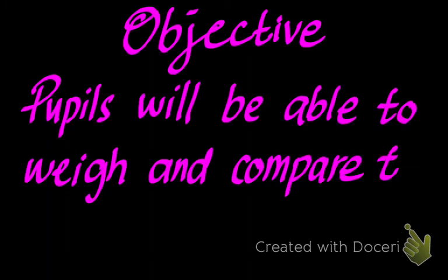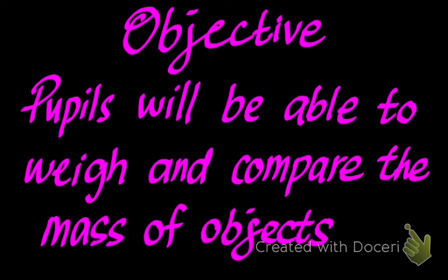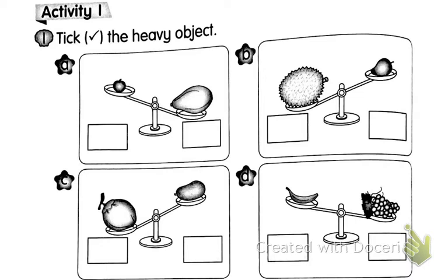Let's look at Activity Number One: check the heavy object. Heavy means large — large objects are heavy. Look at Picture A, which one is heavy? Very good. Look at Picture B — remember, the main point is heavy means large object. Compare the durian to the mango: which one is larger? Of course, the durian.